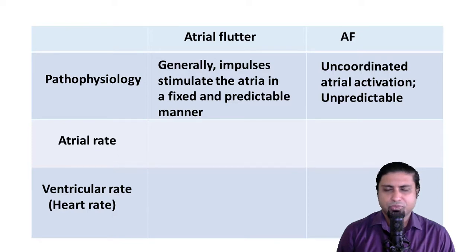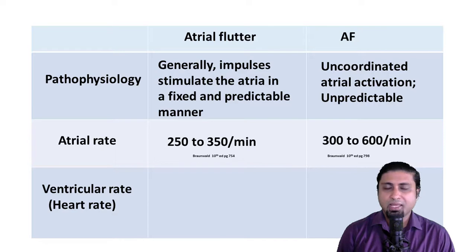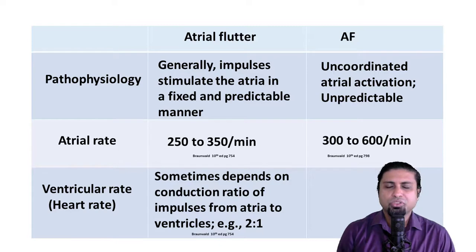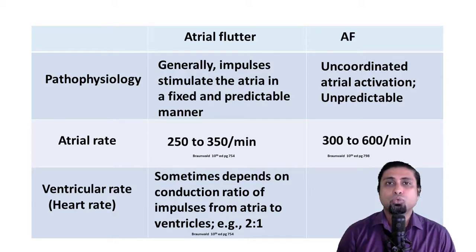The atrial rates in atrial flutter vary from 250 to 350 impulses per minute, while in atrial fibrillation they vary from 300 to 600 impulses per minute. But as discussed, the AV node prevents many of these impulses from being conducted down to the ventricles. In atrial flutter, because the impulses stimulate the atria in a fixed and predictable manner, the AV node may begin conducting impulses in a fixed conduction ratio. Most commonly, the conduction ratio is 2:1 — meaning if the atria beat at 300 impulses per minute, the ventricles beat at 150 beats per minute.